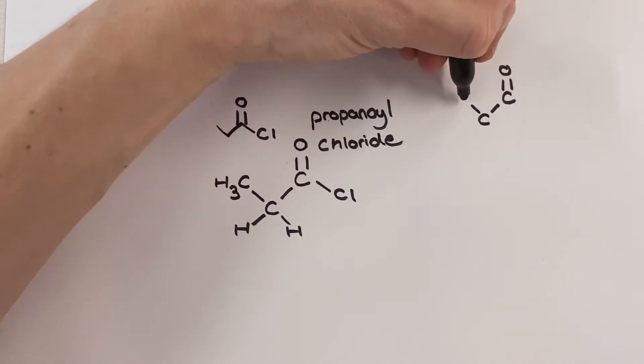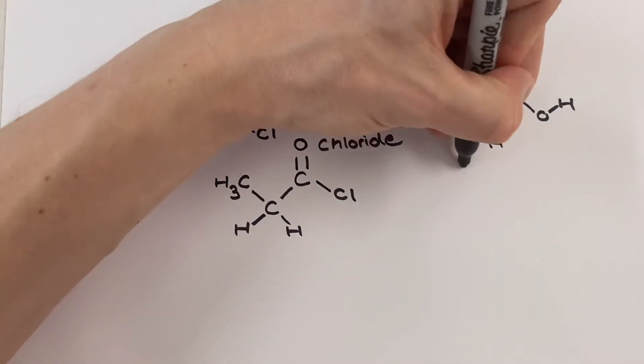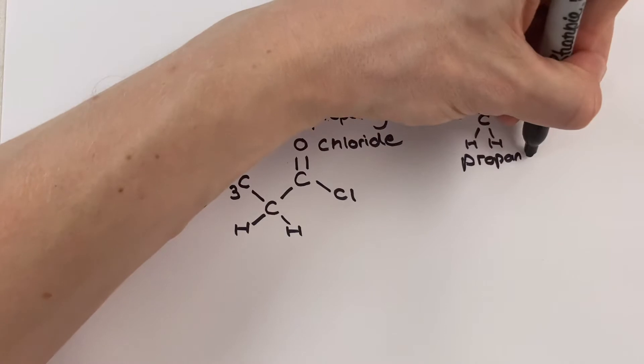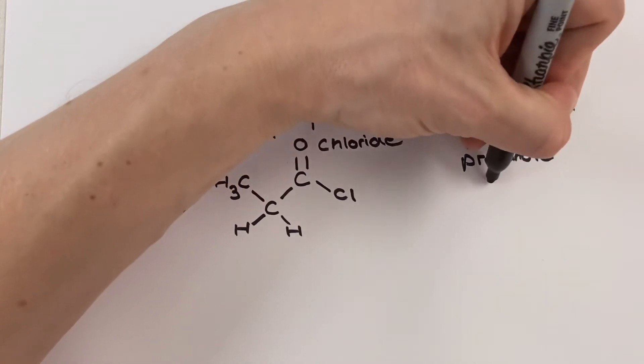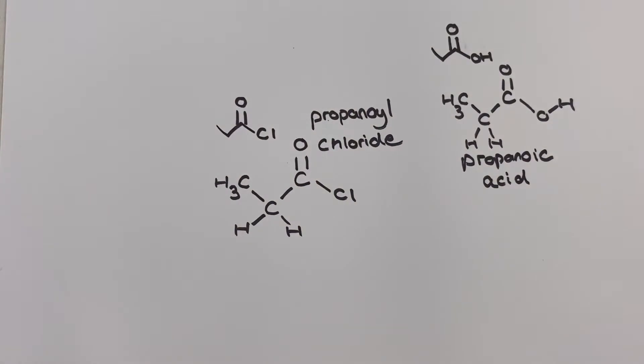The first reaction of our propanoyl chloride is to form a carboxylic acid. Our acyl chloride will react very violently with water to produce a carboxylic acid and some HCl. In the example on screen we can see that the organic product from our propanoyl chloride with water is propanoic acid.